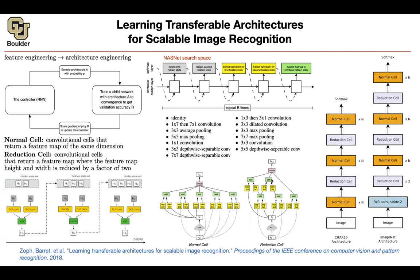Student: Is B=5 the reason we get five core building blocks in each normal and reduction cell? Professor: Exactly. You have five of them — one, two, three, four, five — in both the normal cell and the reduction cell. The RNN is making 25 choices total across those five blocks.